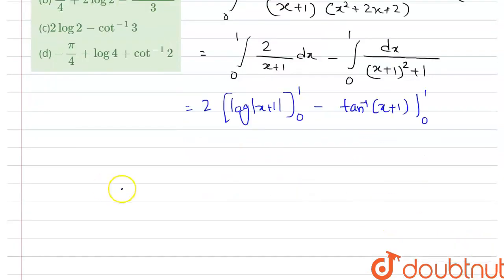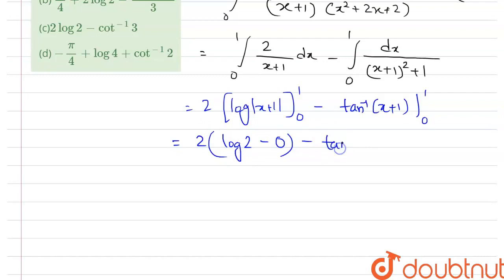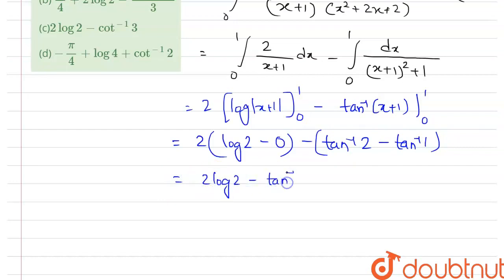Now we will put in the limits. This gives 2[log|1 + 1| − log|0 + 1|], which is 2 log 2 − 0. Minus [tan⁻¹(1 + 1) − tan⁻¹(0 + 1)], that is tan⁻¹(2) minus tan⁻¹(1). Since tan⁻¹(1) = π/4, this becomes 2 log 2 − tan⁻¹(2) + π/4.